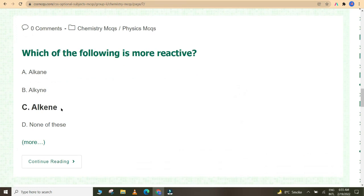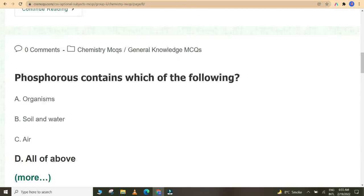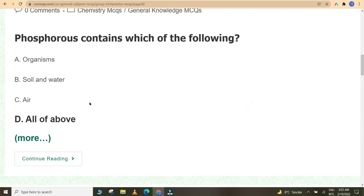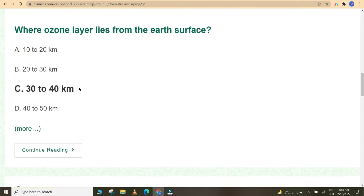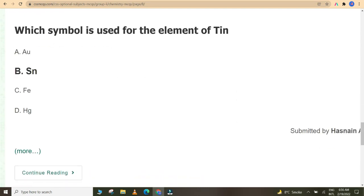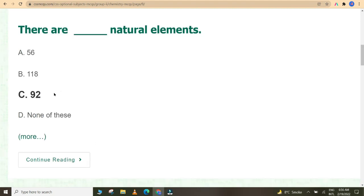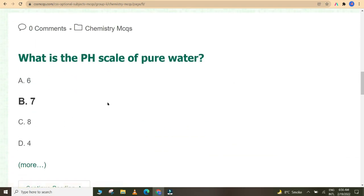Which of the following is more reactive? Alkene. Intrinsic semiconductor is also called as pure conductor. Phosphorus cycle contains organisms, soil and water, air—all of the above. Where ozone layer lies from the earth's surface? 30 to 40 kilometers. Which symbol is used for the element of antimony? Sb. Which symbol is used for the element of tin? Sn. There are 92 natural elements. A chronometer is used for measuring longitude. What is the pH scale of pure water? 7.